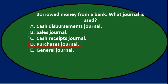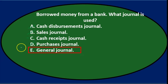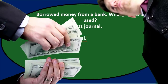D. Purchases journal. If we borrowed money, we may have borrowed it to purchase something, but we haven't purchased it yet — we only have the resources now to do so. So I don't think it's going to be the purchases journal. E. General journal. The general journal will be the default if we can't fit it anywhere else. So we're left with C and E: cash receipts journal and the general journal. I think this will typically fall into the cash receipts journal if we received cash for the borrowed funds.